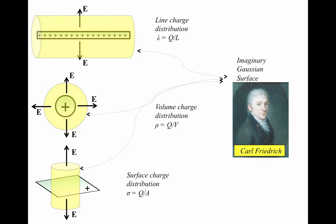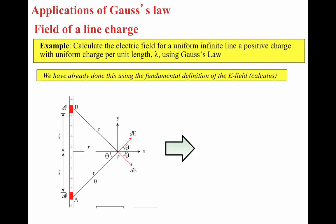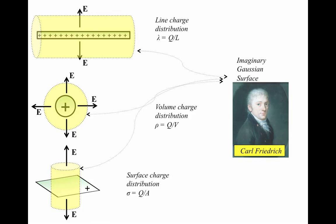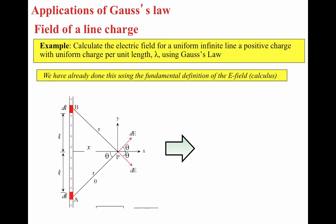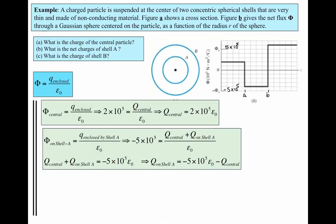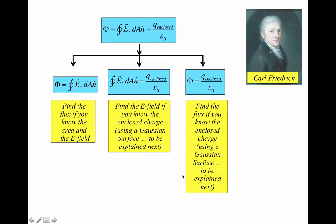So the first step in using Gauss's Law to calculate the electric field due to a uniform continuous charge distribution is selecting the imaginary Gaussian surface: cylinder for a line, sphere for a sphere, and cylinder for a sheet. I'll stop here and continue in the next video with applications of this formula — specifically using it to calculate the electric field from the enclosed charge by integrating over the closed surface.